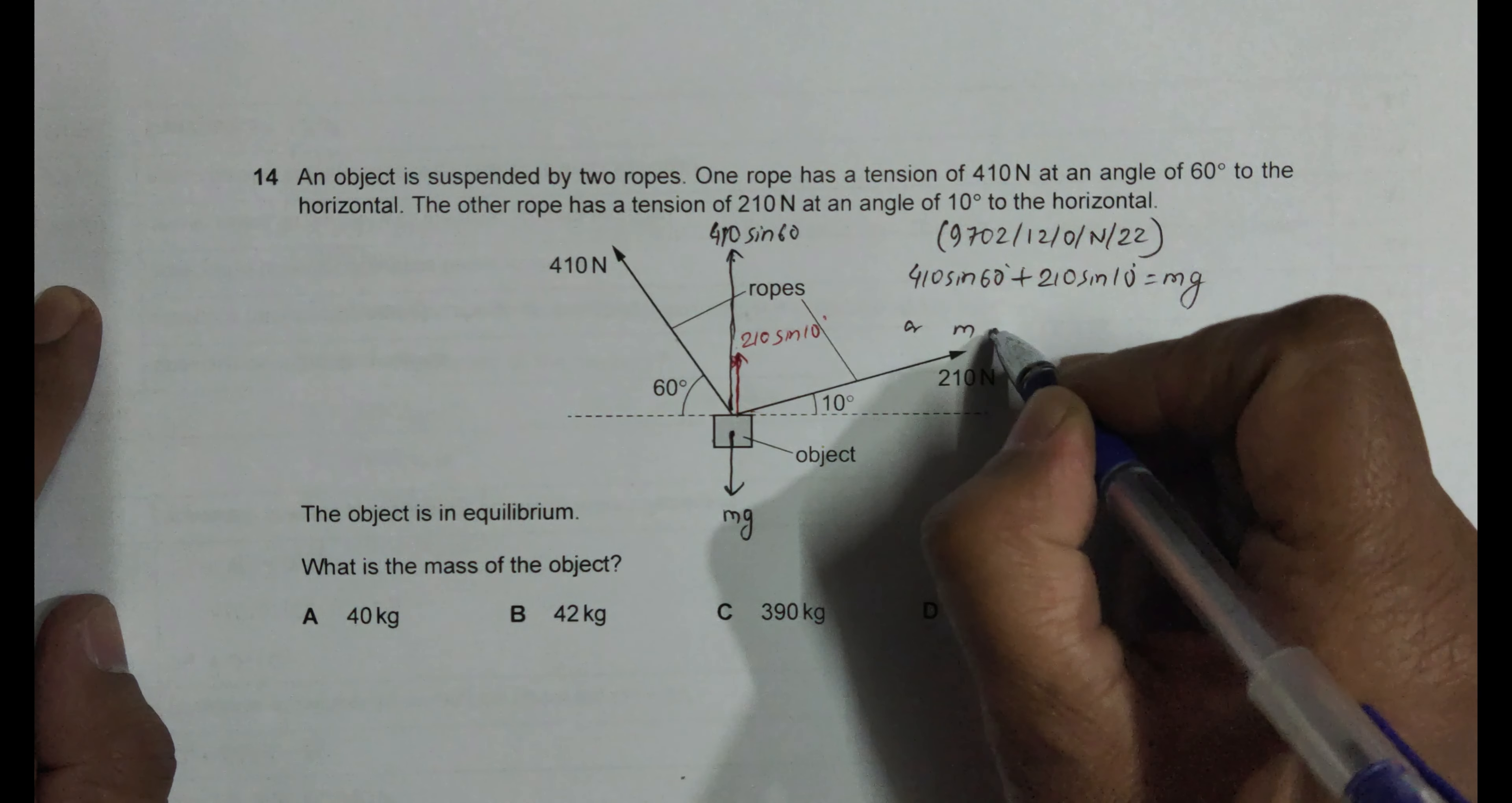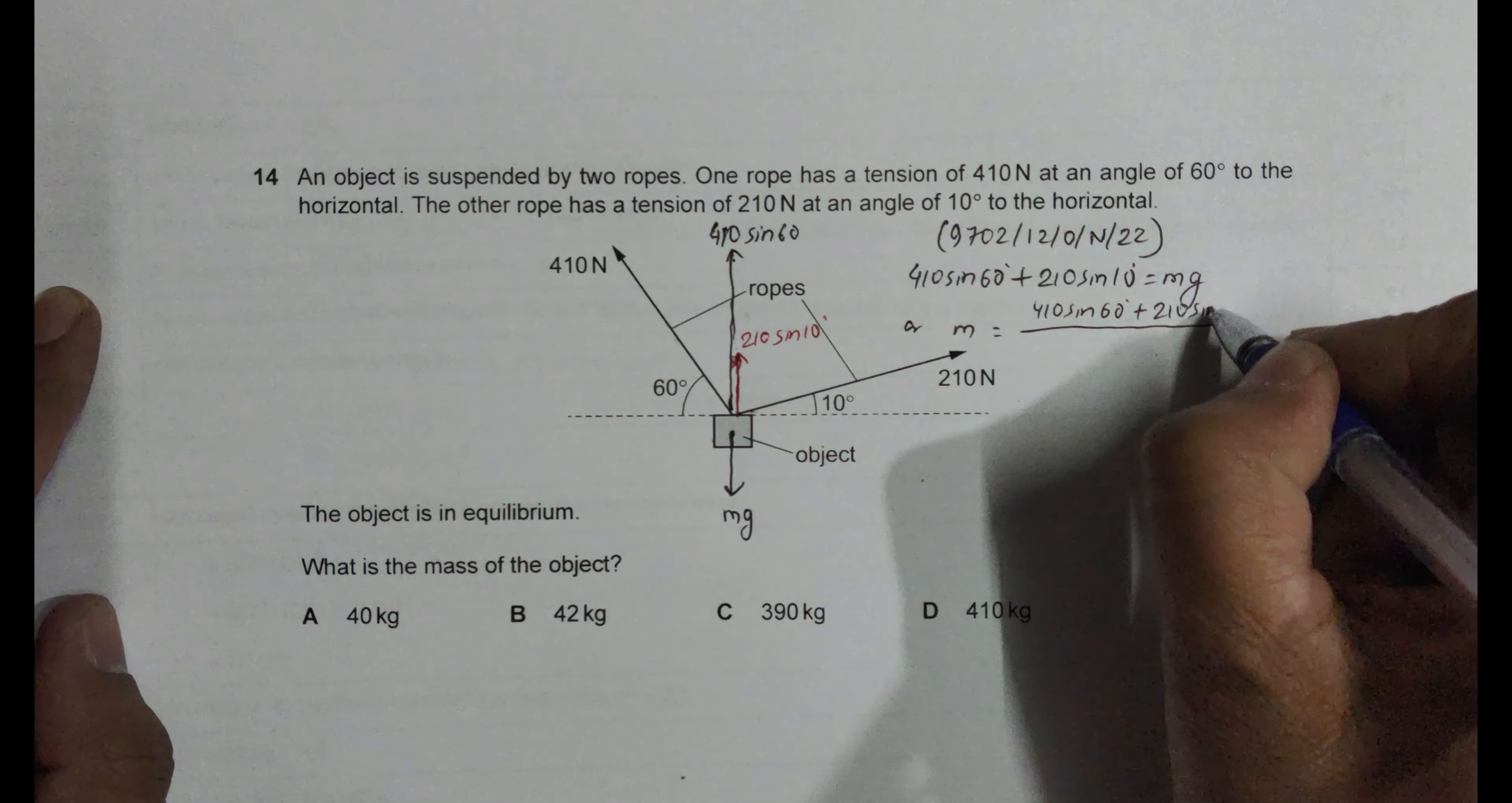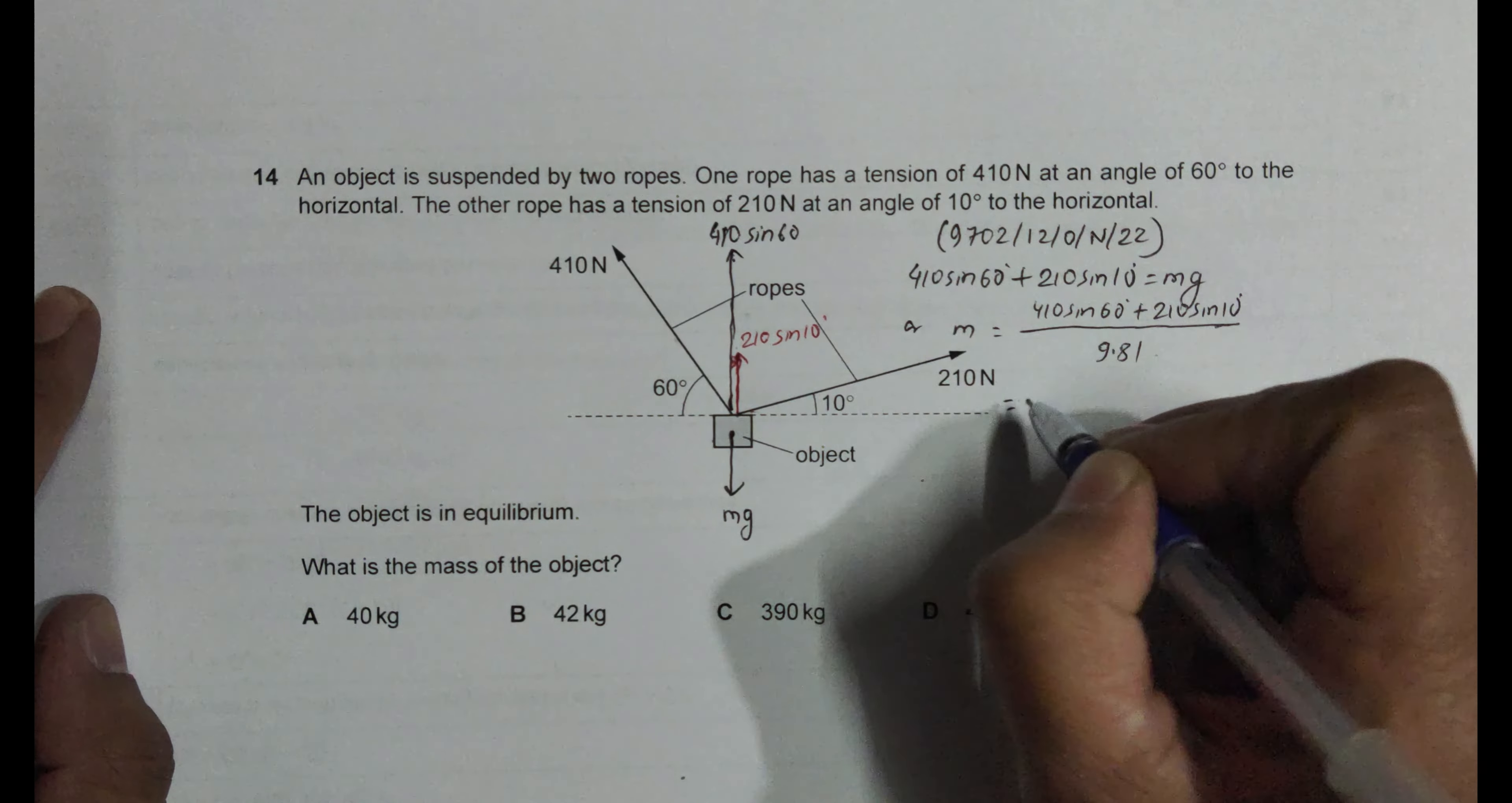So we must have 410 sine 60 degrees plus 210 sine of 10 degrees should be equal to m into g. So this gives us m is equal to 410 sine 60 degrees plus 210 sine of 10 degrees divided by g, and that g is equal to 9.81. So let's do the calculations.